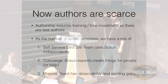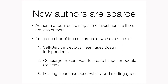There's a problem, and that's that our authors are a bit scarce. Authorship, as we saw, requires making it through the three levels — training, time, investment. As a result, as we've grown to have these teams, we sort of have three cultures going on now: the ideal, which is self-service DevOps where the team uses Bosun pretty much independently; concierge, where experts in Bosun help people when they need to; and then the missing team — there are really just gaps.